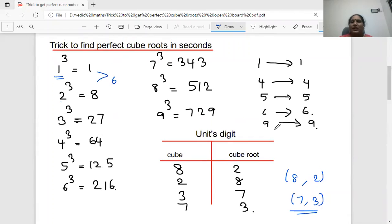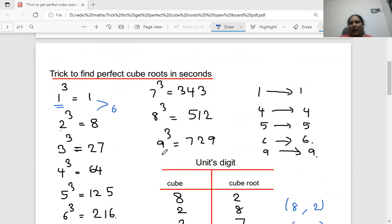To find the perfect cube roots in seconds, we should know 1 cube to 9 cube. You have to learn that 1 cube to 9 cube. Then from 1 cube to 9 cube, we have a pattern.